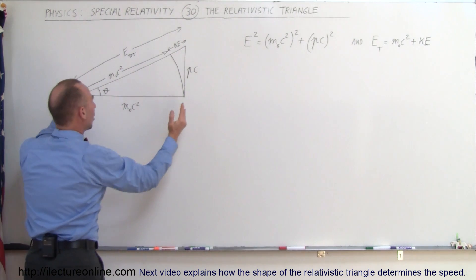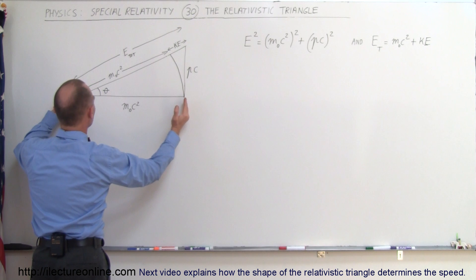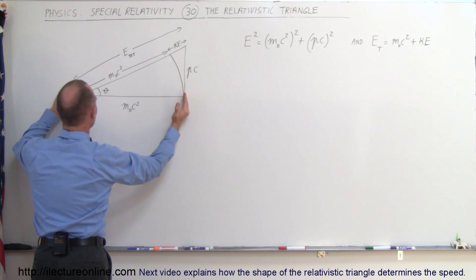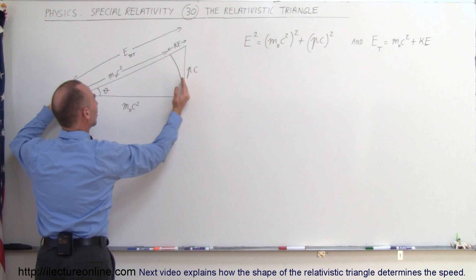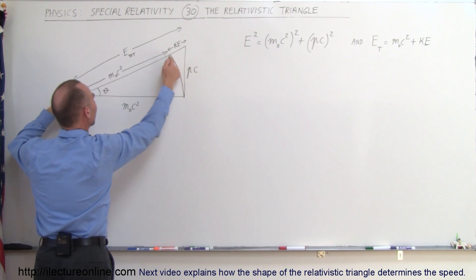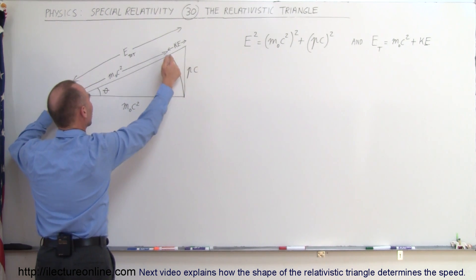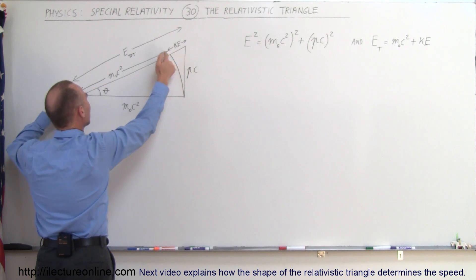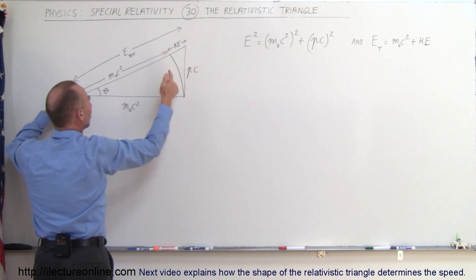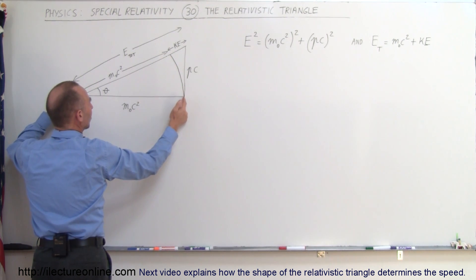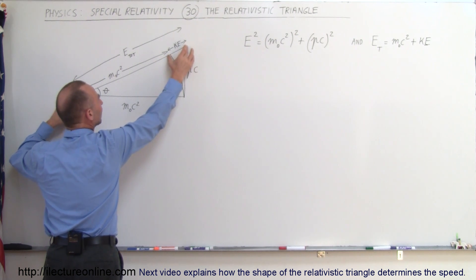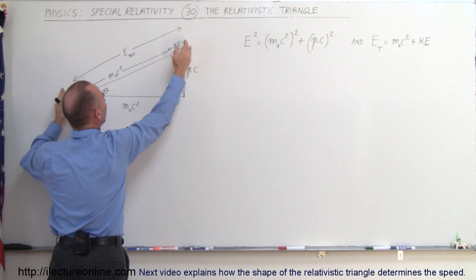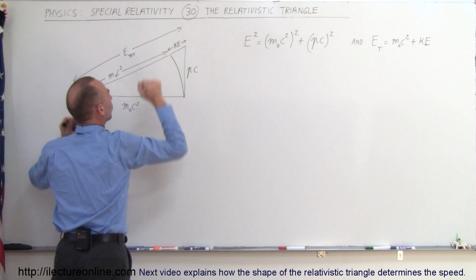If we now draw an arc starting from this point here and anchoring on the pivot point here, and draw the arc along this way, we can see that this distance is the same as this distance — so this represents the rest mass energy, just like this represents the rest mass energy. The leftover energy then has to be the kinetic energy to make up the total energy.